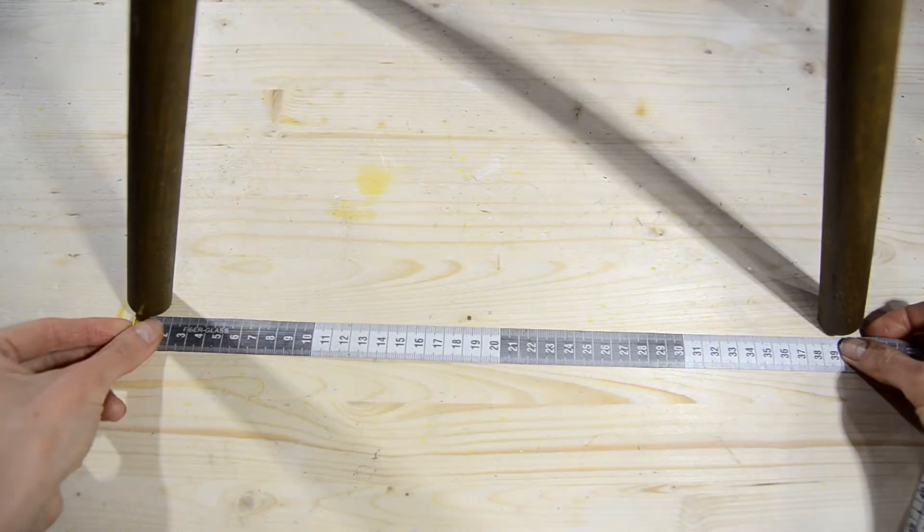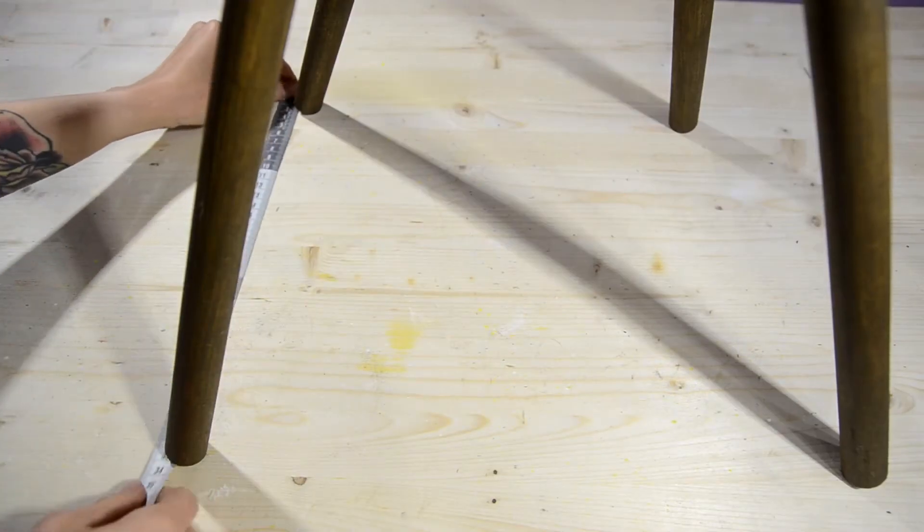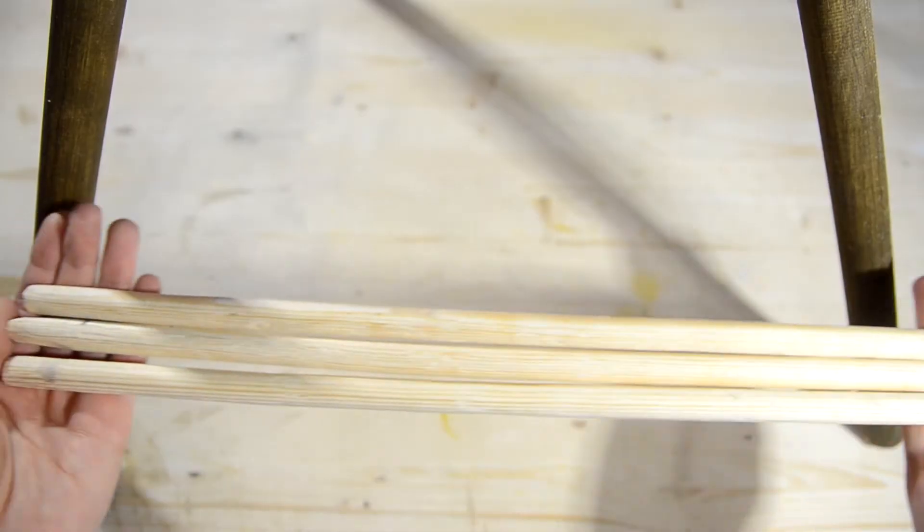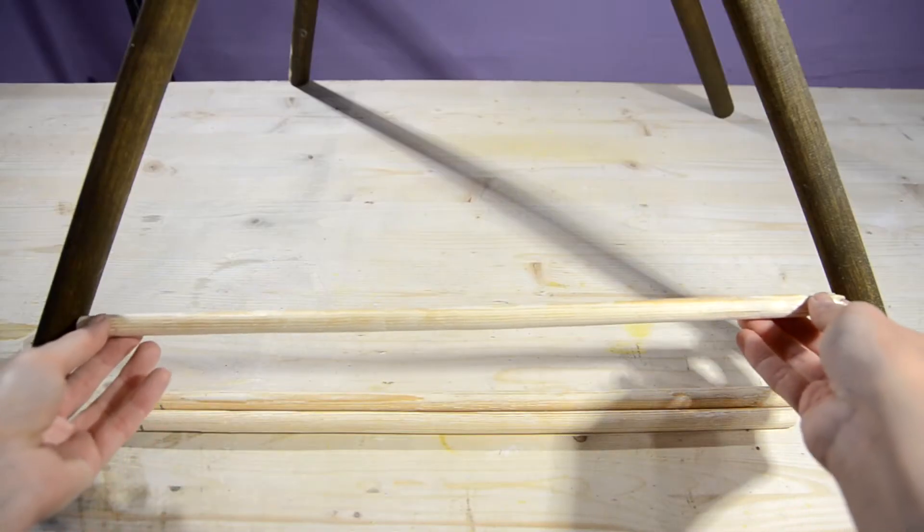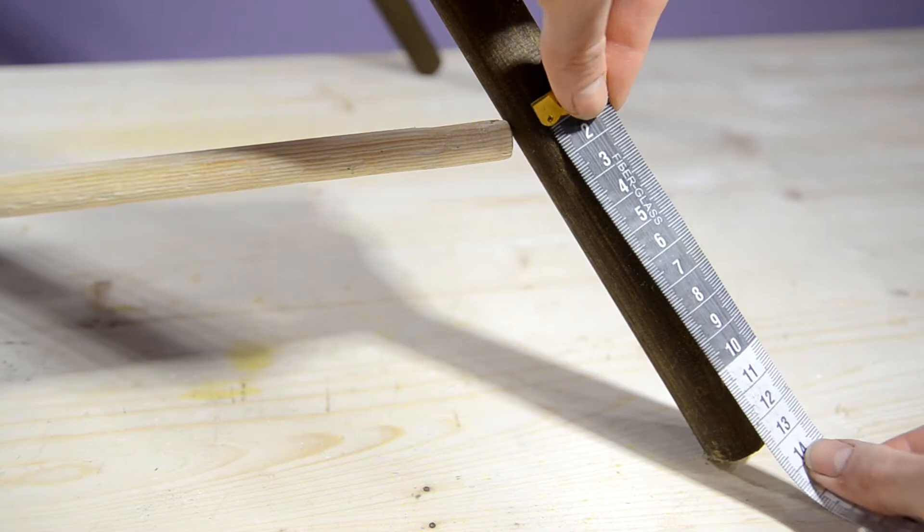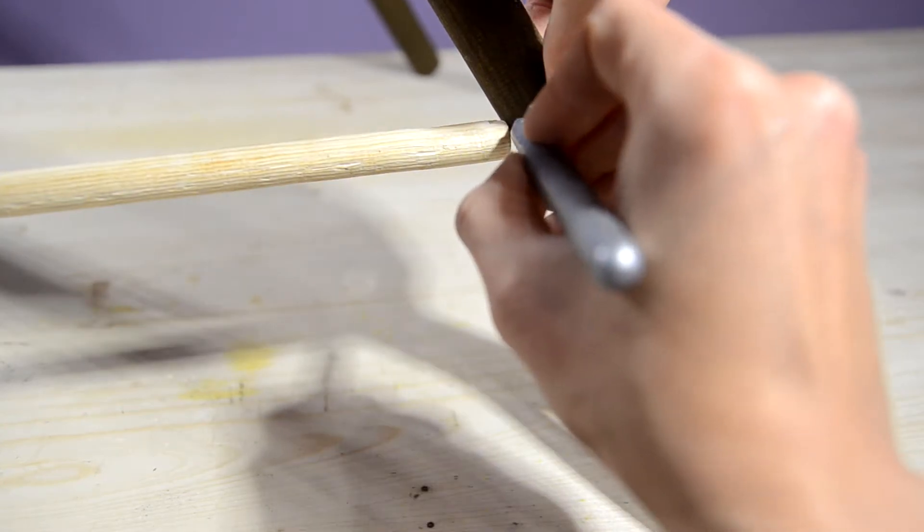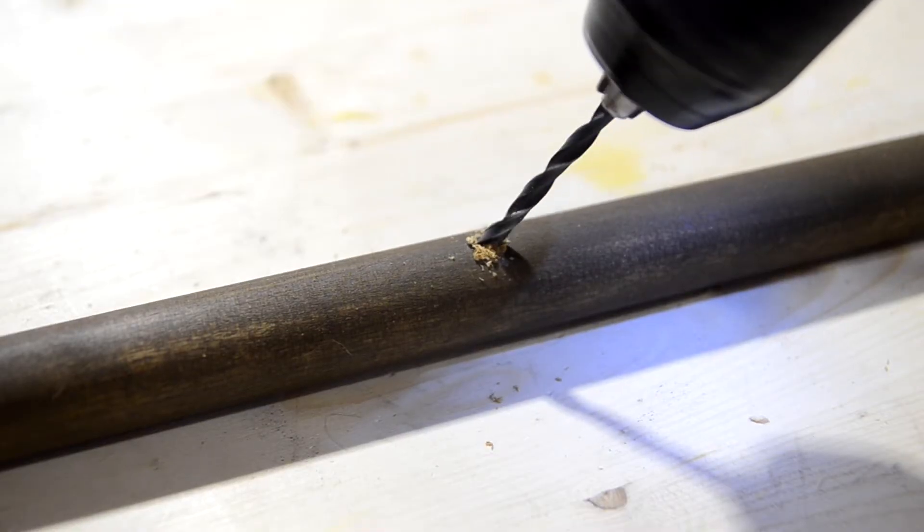Now let's measure the length between the front sticks. Specifically in this variant, I'd like to make a hanging kind of hammock, so we'll need some bulkheads for it. You can find them, for example, in craft stores or chip them on your own.